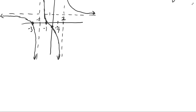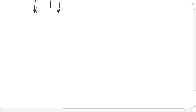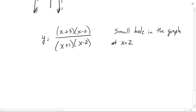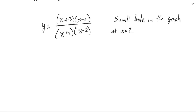There is one little asterisk on that. Sometimes you'll have an equation where you have, say, x plus 3 times x minus 2 on the top, and x plus 1 times x minus 2 on the bottom. What happens is we get a small hole in the graph at x equals 2. Most of the time, x minus 2 over x minus 2 produces the exact same number — it's almost like a 1. But at x equals 2, you'll have 0 divided by 0, which is undefined, and that gives us a little tiny hole.